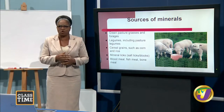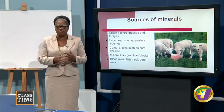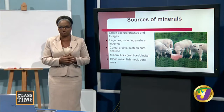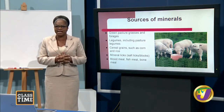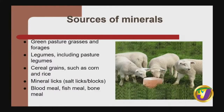Farm animals can get their sources of minerals from the crops they eat, cereal grains such as rice and corn, and also from mineral licks — as seen in the picture where sheep are licking a mineral lick to get additional minerals if they cannot get enough from the pasture grasses. They can also get minerals from bone meal, fish meal, and blood meal.